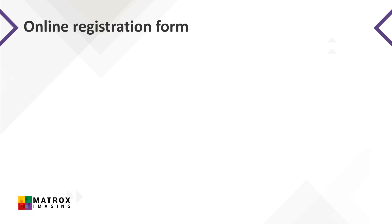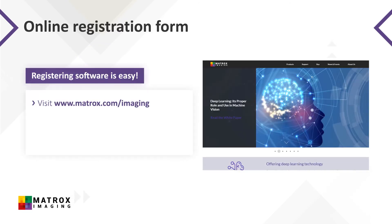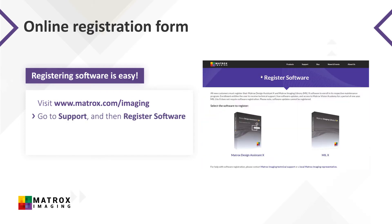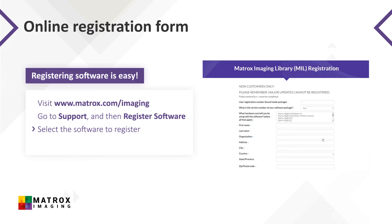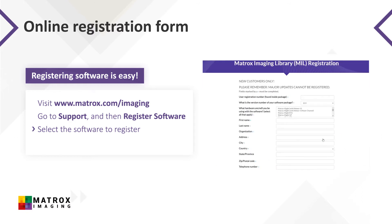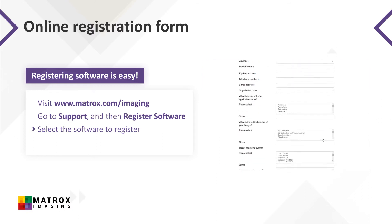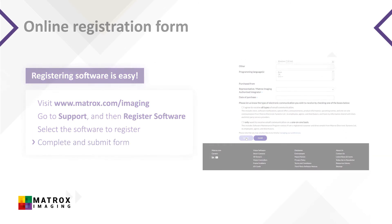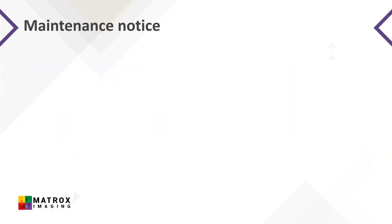To register, visit the support section on our website, select Register Software, and complete the form that corresponds to the software you've purchased — either MIL or Matrox Design Assistant. Once you complete and submit the online registration form, you'll receive the maintenance notice email shown here.